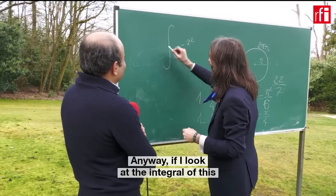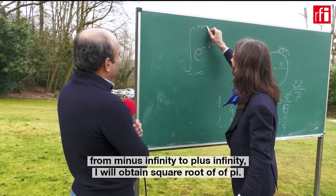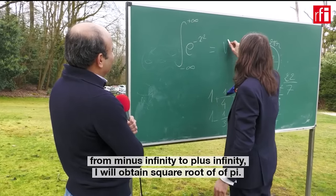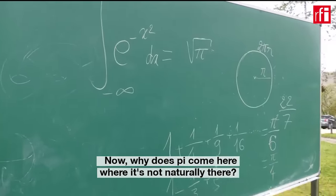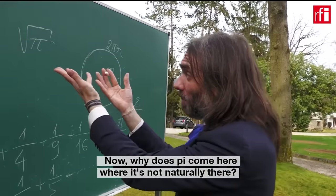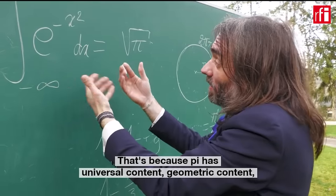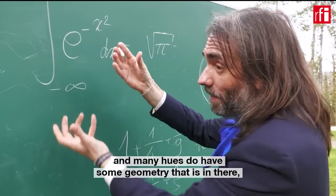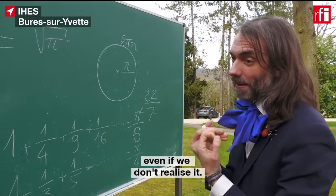Anyway, if I look at the integral of this from minus infinity to plus infinity, I will obtain square root of π. Now, why does pi come here where it's not natural? Because pi has universal geometric content, and many hues do have some geometry that is in there even if we don't realize it.